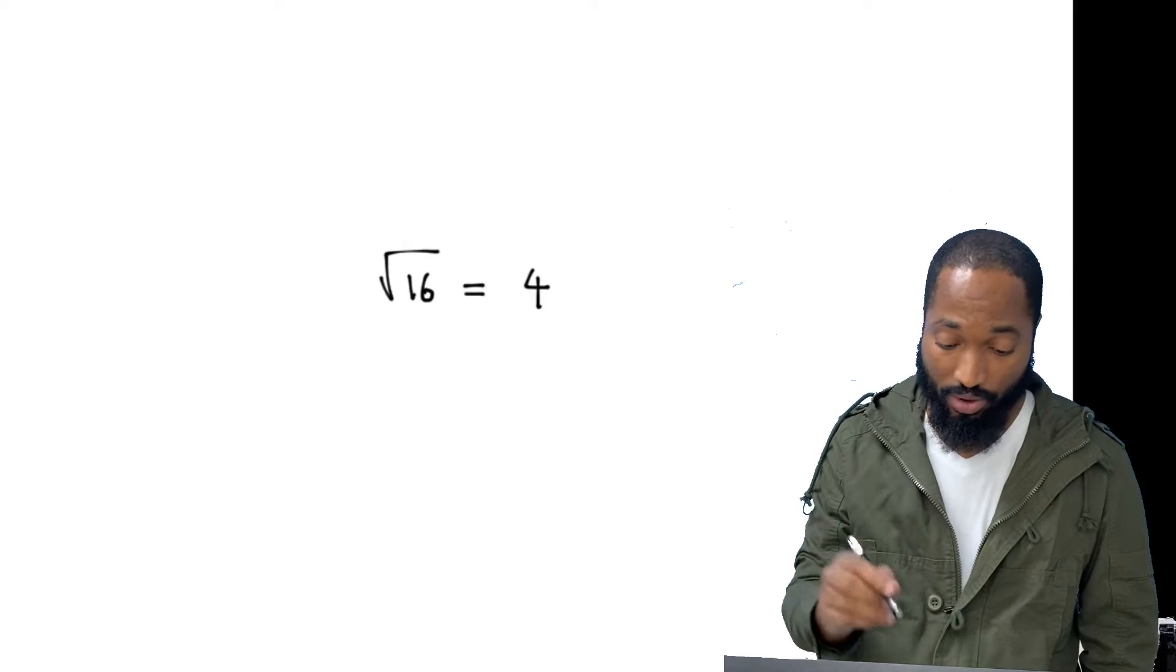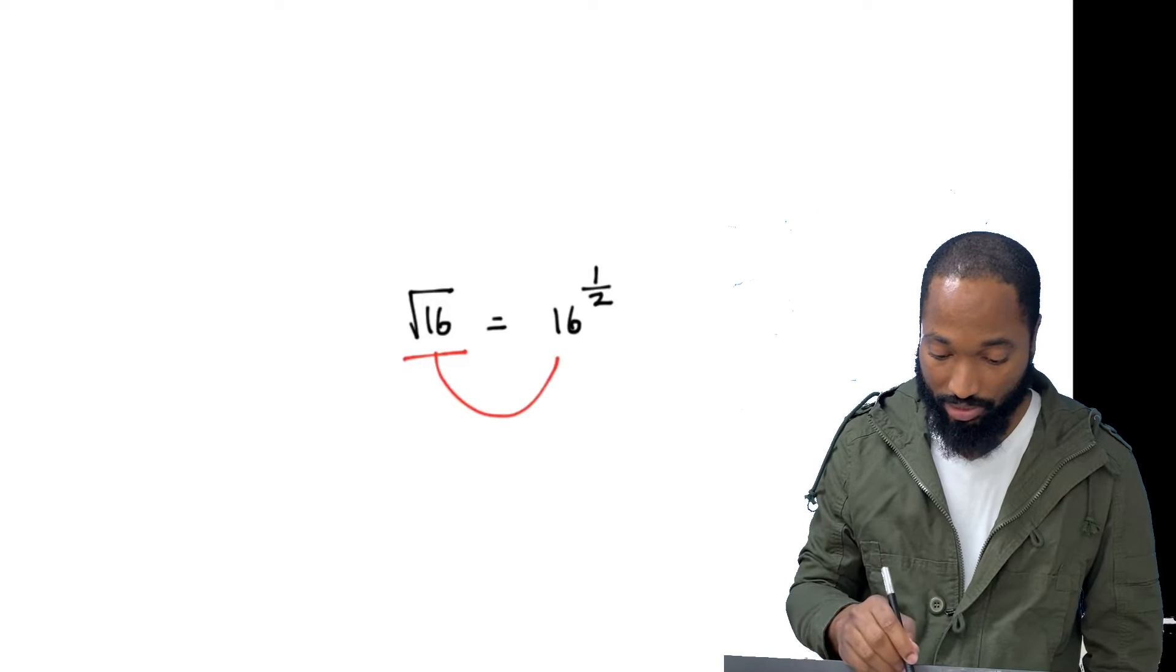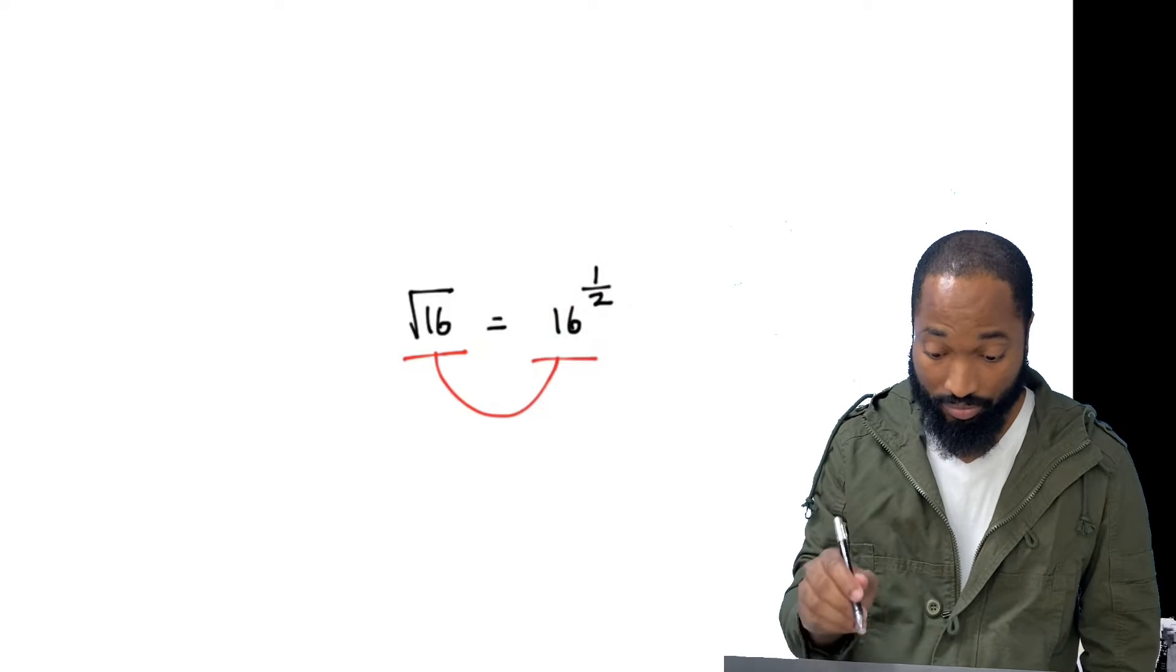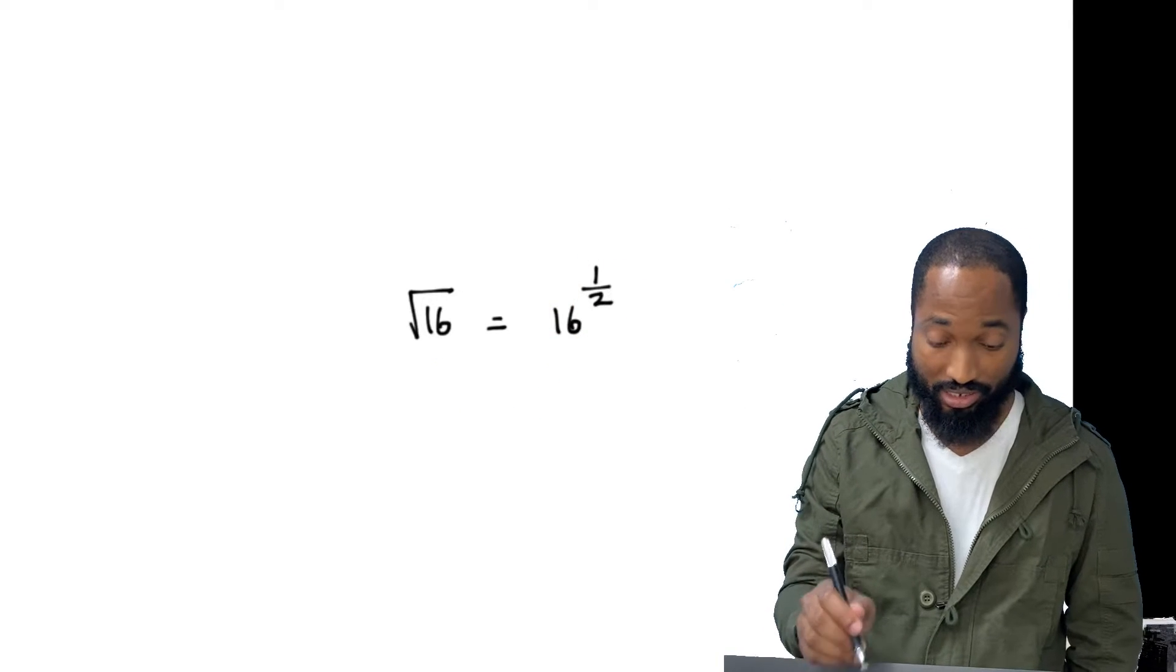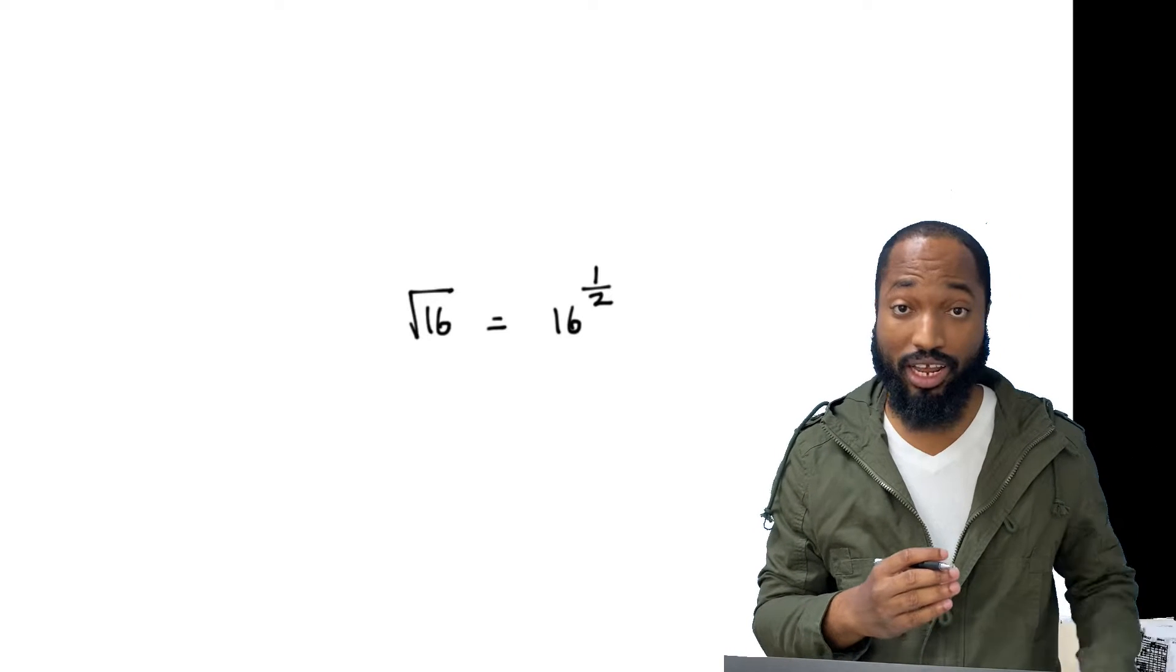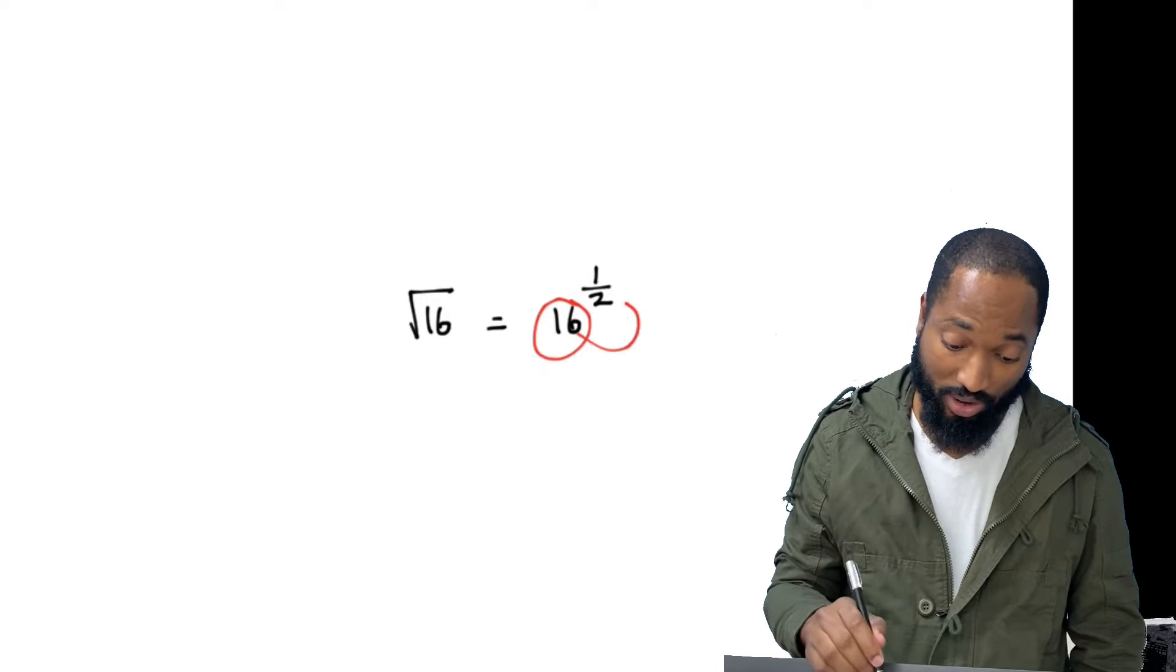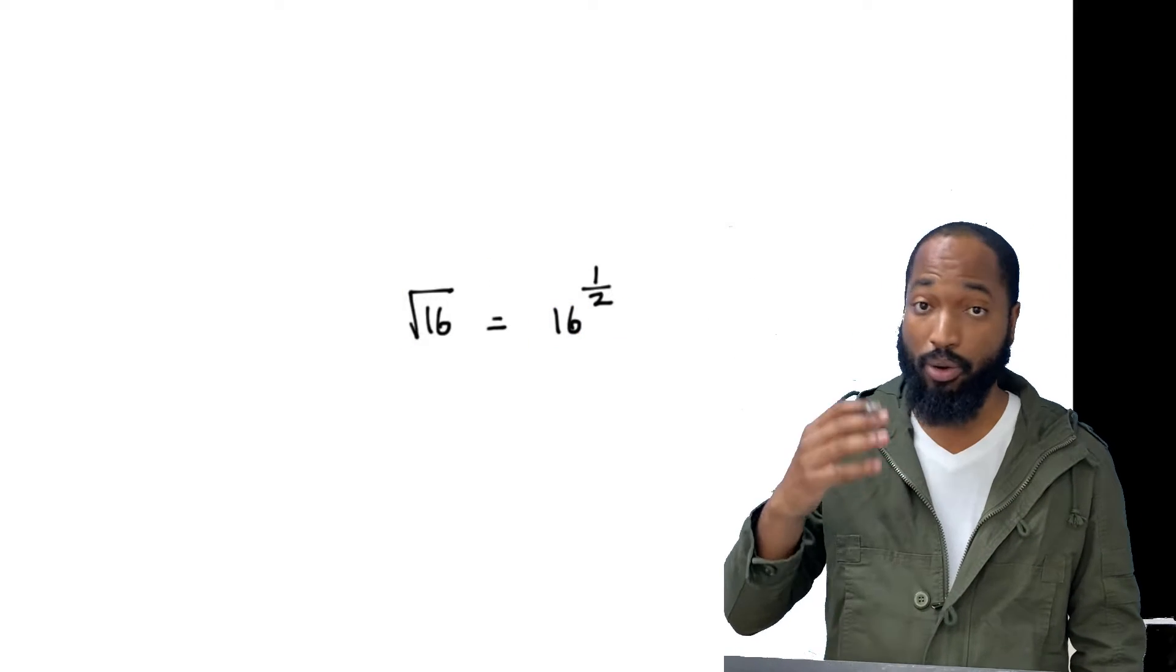But there's another way to write this. I can write the square root of 16 is equal to 16 to the power of a half. That is the way to write square root in terms of indices. But pause, there is an all kind of thing. So this is a new way that you learn how to write square root. Square root can be written as 16 to the power of a half.